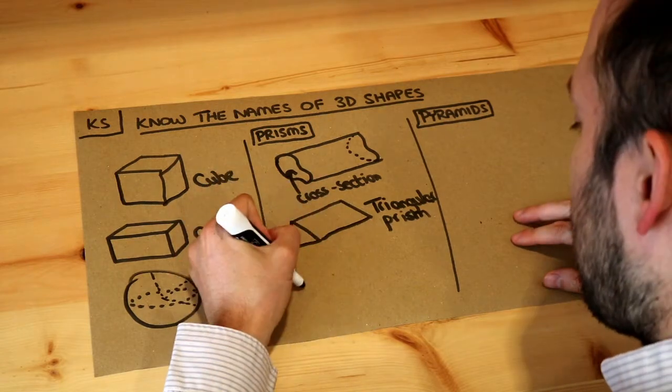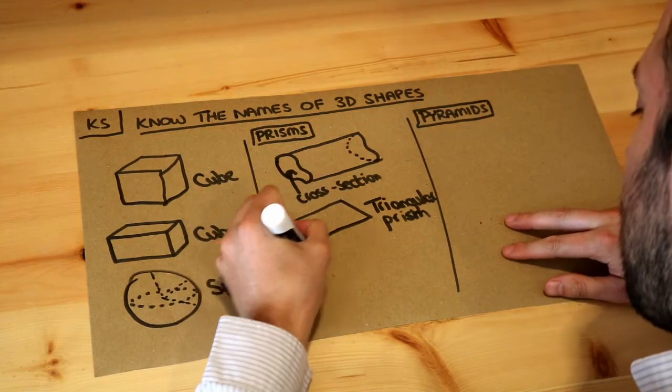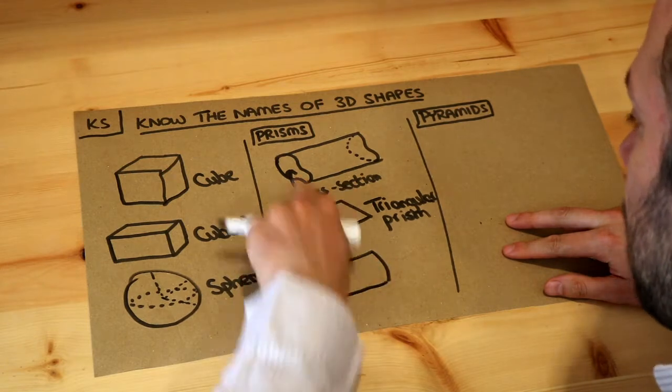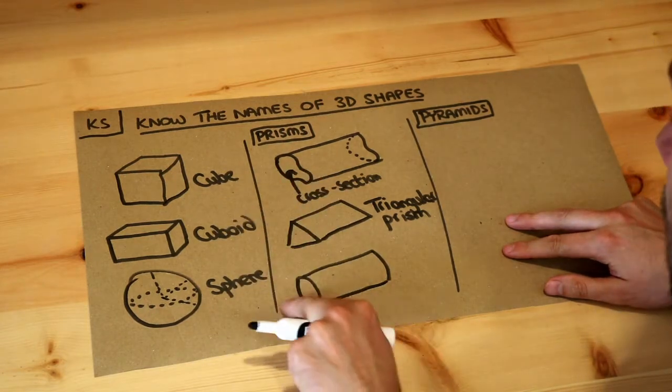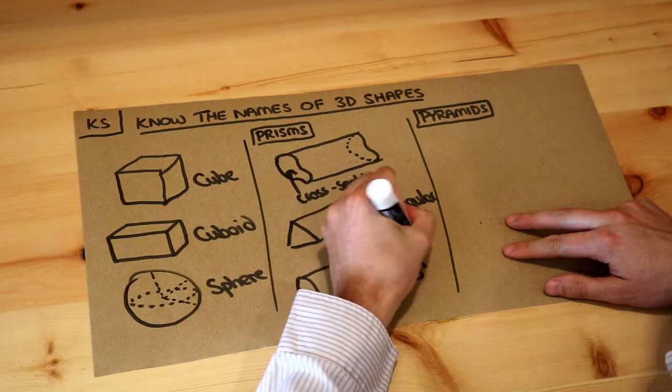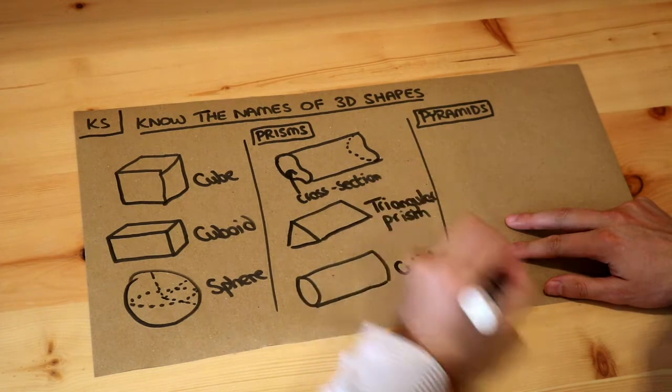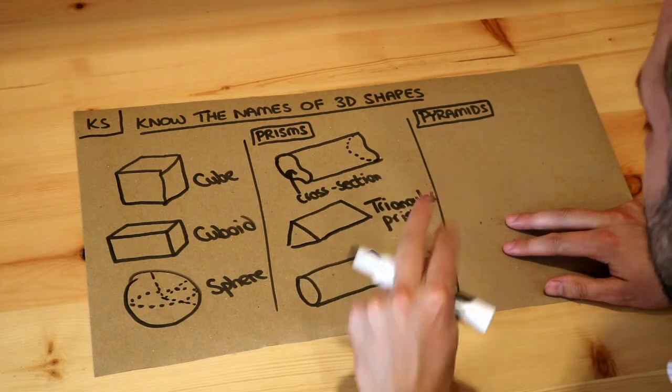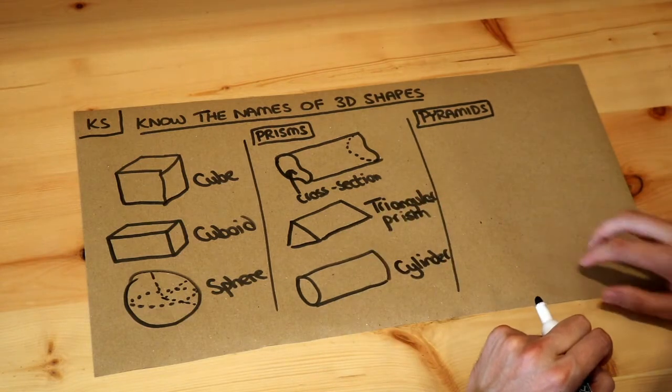And the only other key 3D shape you need to know here is when the cross-section, this shape here, is a circle. And when you get a tube like that, that is known as a cylinder. So we don't call it a circular prism, we have a special name for that which is a cylinder.